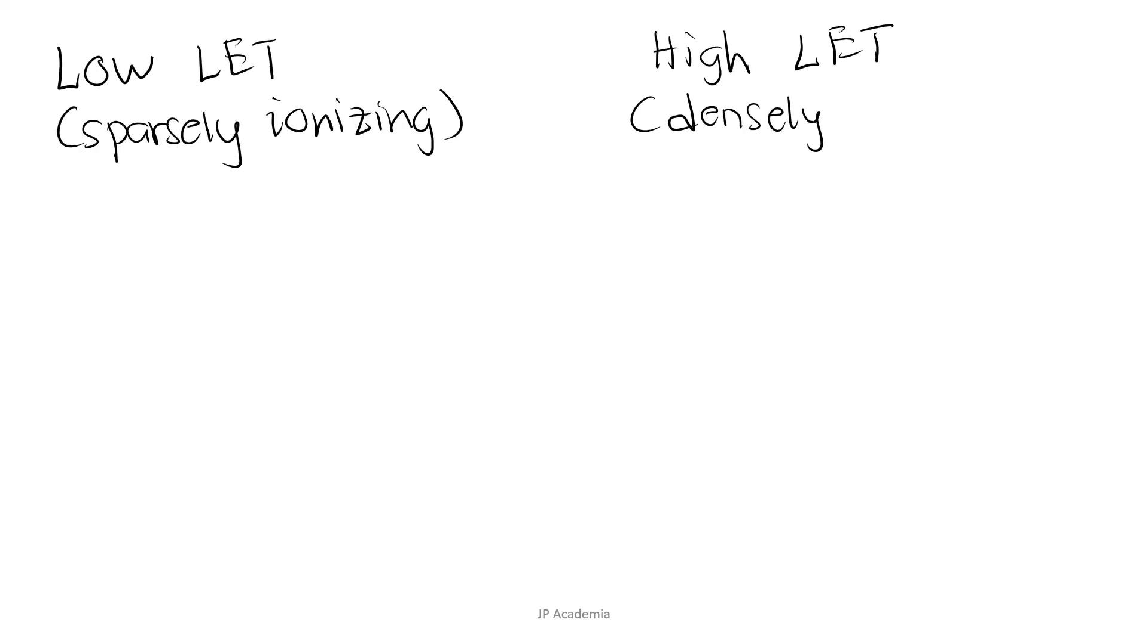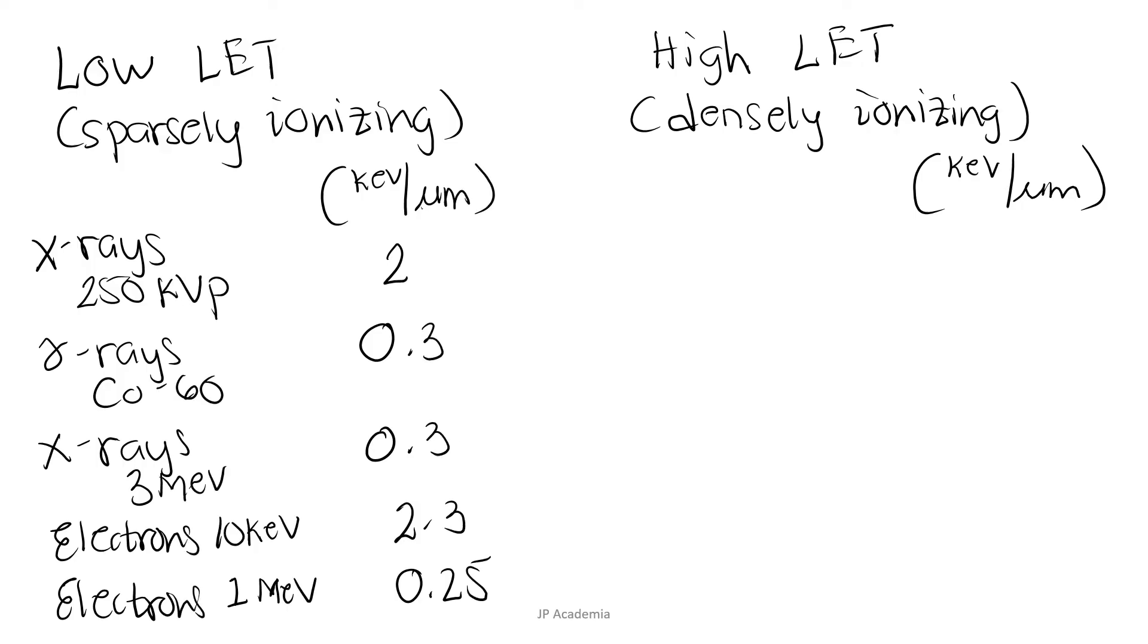After defining LET, according to the LET or the density of ionization we have these categories of ionizing radiation: first, the low LET which means sparsely ionizing radiation, and high LET which means densely ionizing radiation. It has a unit of kilo electron volt per micrometer. The focus of LET is on the energy absorption of the medium and not on the energy loss by a charged particle as described by the stopping power discussed in radiation physics. So these are the examples of low LET radiation and we have these values of LET produced in tissue.